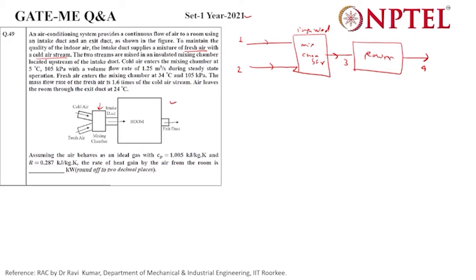For the cold stream: 5 degrees Celsius and 105 kilopascals. We will write this in Kelvin, so 278 K, 105 kPa. The volume flow rate is 1.25 meter cube per second. V1 dot is 1.25 meter cube per second.